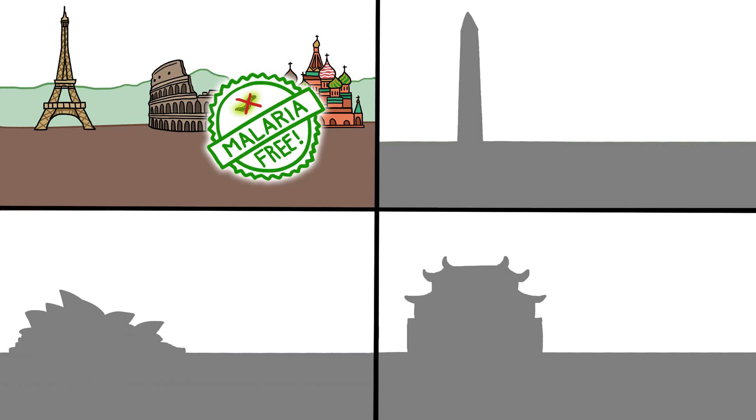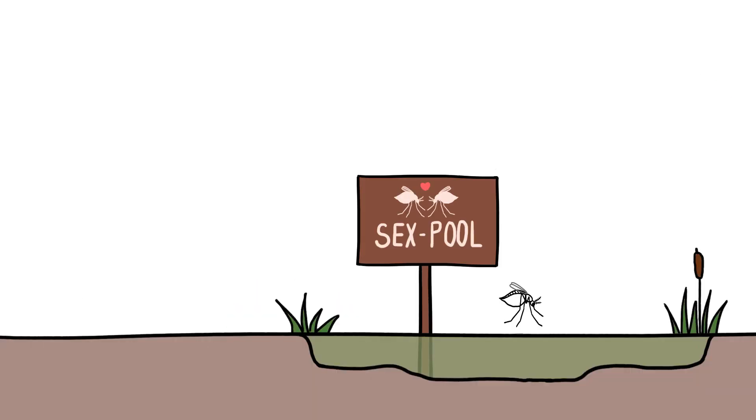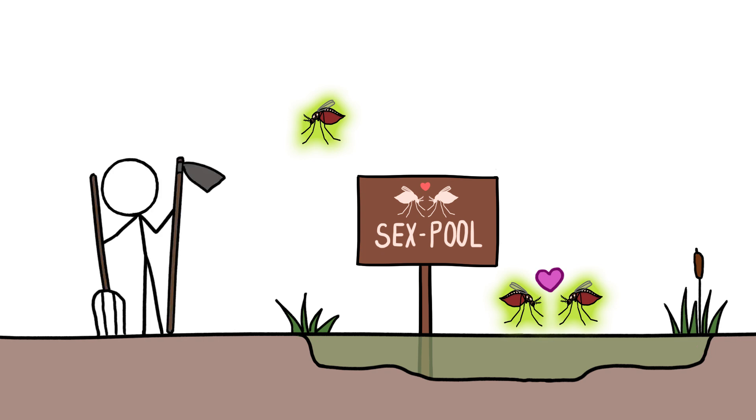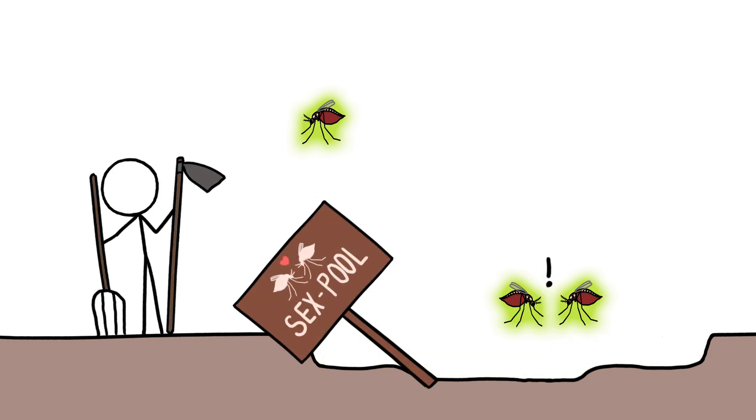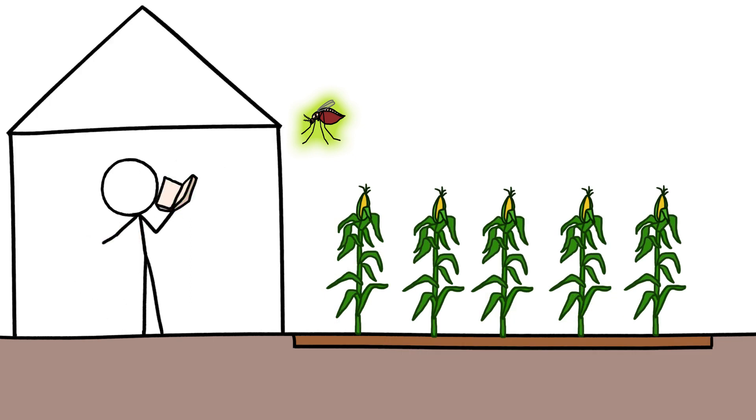Nor do other temperate places, including North America, Australia, and Northern Asia. That's partly because temperate countries developed more quickly. As people drained wet areas for agriculture, mosquitoes lost their breeding grounds. And as people gained wealth, they spent more time inside, where mosquitoes couldn't reach them as easily.